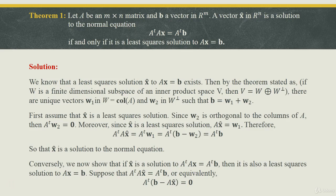First, assume x̂ is a least square solution. Since w2 is orthogonal to the column space of A, then A^T w2 = 0. Moreover, since x̂ is a least square solution, A x̂ = w1. Therefore A^T A x̂ = A^T w1 = A^T (b − w2) = A^T b.